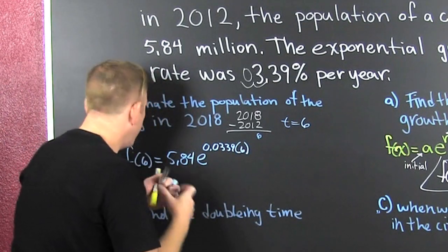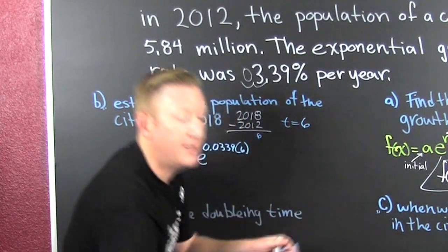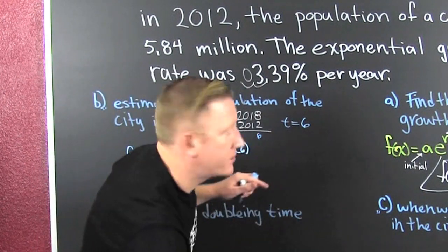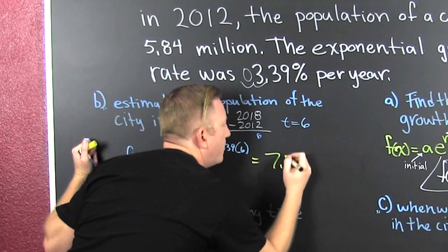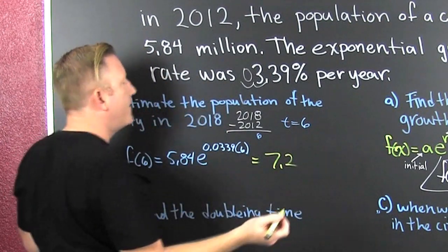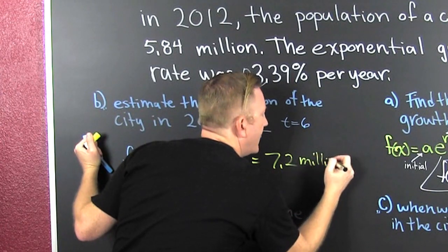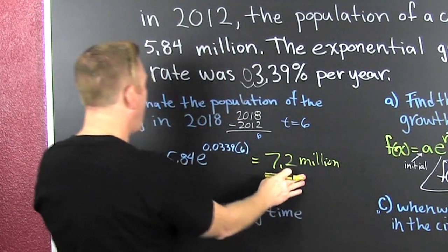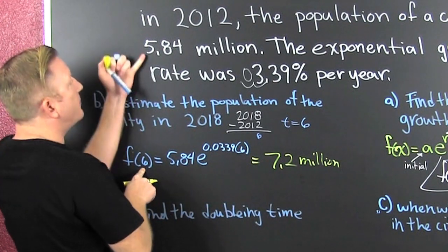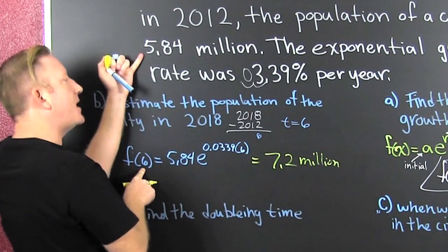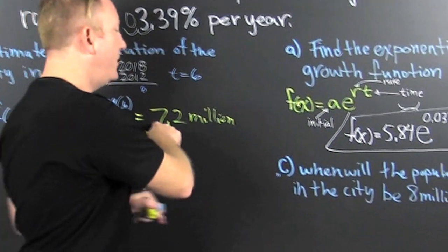When we work all that out — boom — you put it in your calculator. Upon computation, you get 7.2. What's that? That's million. Because we put in time in years and we get out population size in millions. So looks like 7.2 million.